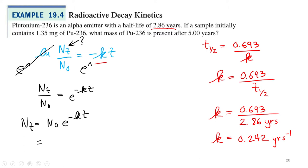And so what is my n sub 0, my initial amount? 1.35 milligrams. And then times e to the negative k, which we just calculated as 0.242 reciprocal years, times 5, 5.00 years.